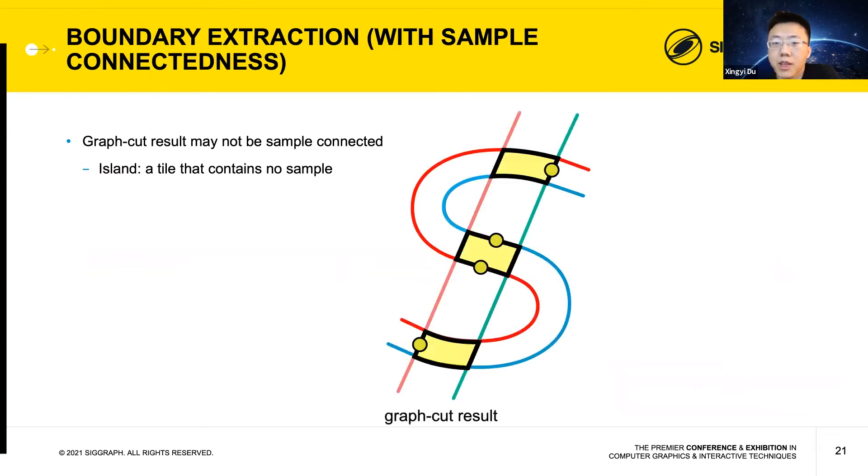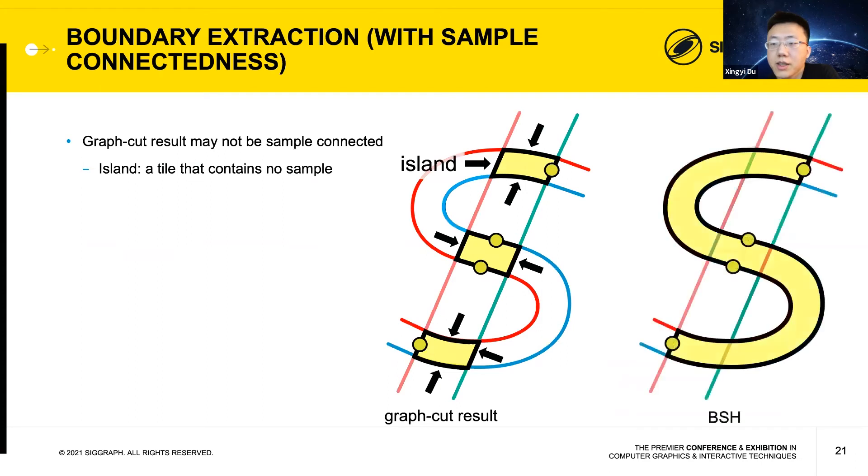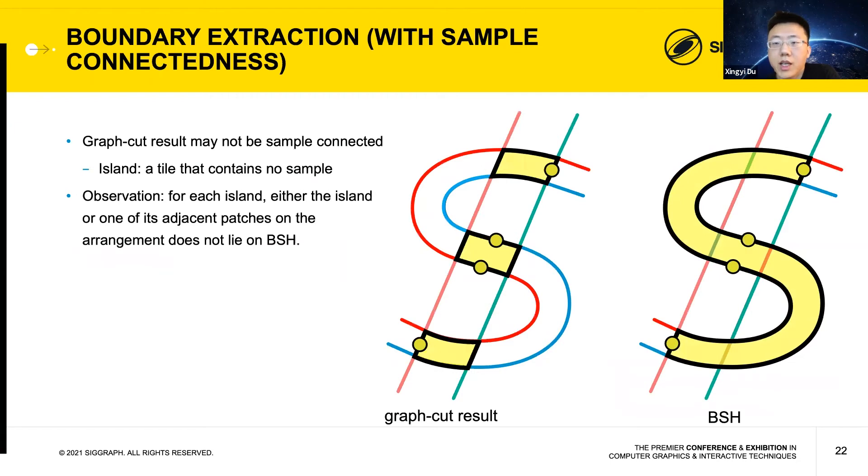Here is an example. The islands are pointed out by the arrows. For comparison, we show the sample connected BSH shape, which doesn't have any islands. A key observation is, for each island, either the island or one of its adjacent patches on the arrangement doesn't lie on BSH. For example, the red arrow points to an island that lies on the graph cut result but not on the BSH shape. Another example is this island on the top of the shape. It lies on both graph cut result and BSH shape, but one of its adjacent patches, pointed by the red arrow, doesn't lie on the BSH shape.